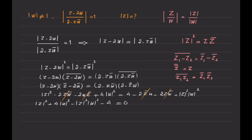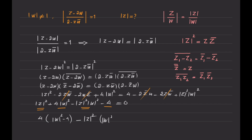The only thing left is to factorize the left-hand side. I can factor 4 out of the first and last terms to get 4 times absolute value of w squared minus 1, and factor out minus absolute value of z squared from the remaining terms to get minus absolute value of z squared times absolute value of w squared minus 1. This gives the factored form: absolute value of w squared minus 1, times 4 minus absolute value of z squared, equals 0.